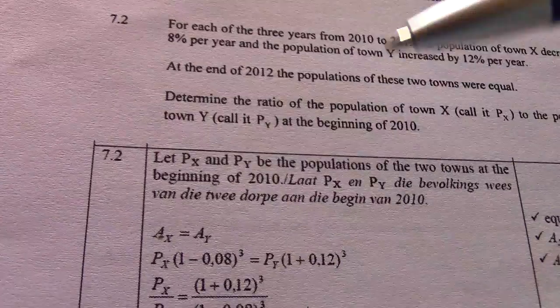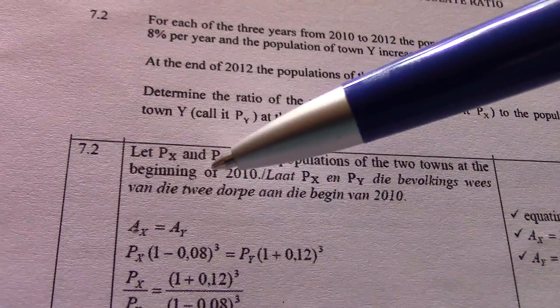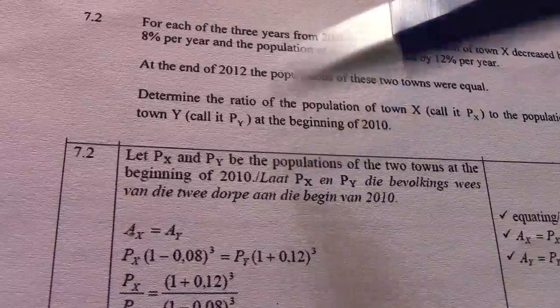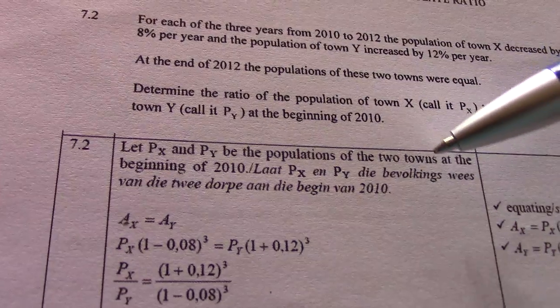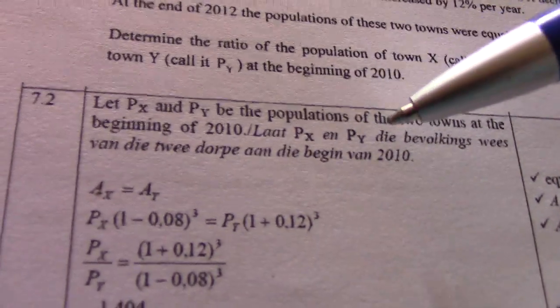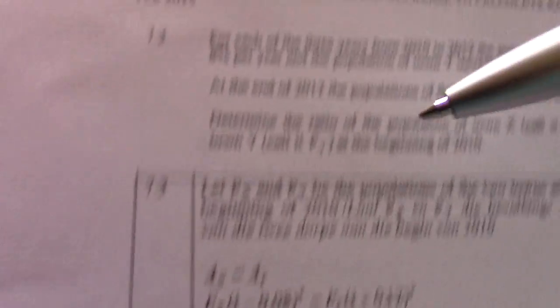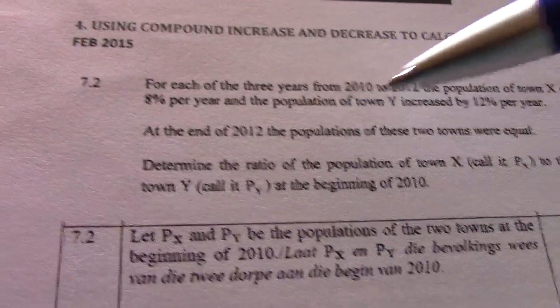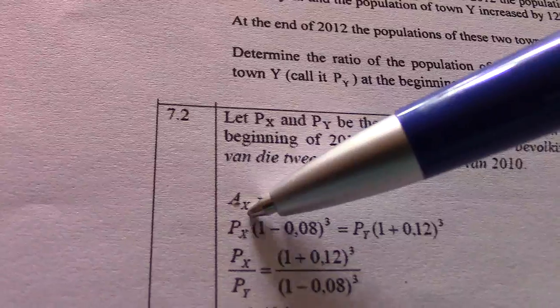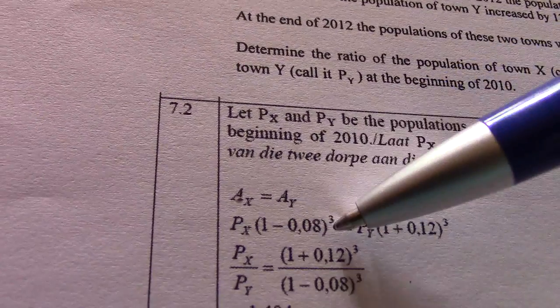So we have PX and PY, the populations of the two towns at the beginning of 2010. Take note: no value was given. Let PX and PY be the populations at the beginning of 2010. They say at the end of 2012 these two towns were equal, so the accrued value for town X and the accrued value for town Y is equal.